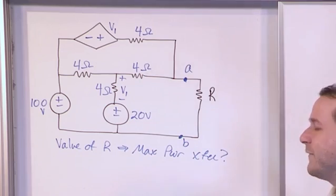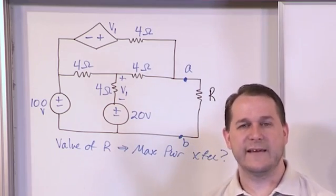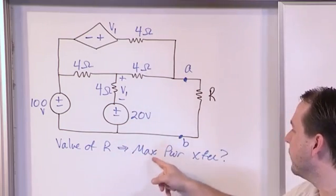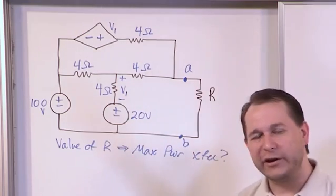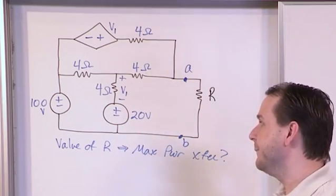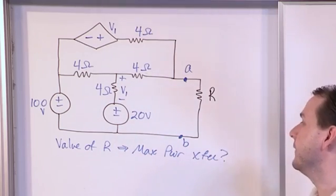So that's what we're going to do here, because you only have to solve one set of equations to get the Thevenin resistance. Remember, the question is, what value of R results in maximum power transfer? All you care about finding is the Thevenin resistance. You don't need to know the Thevenin voltage, because you're not asked for that, you're only asked for this.